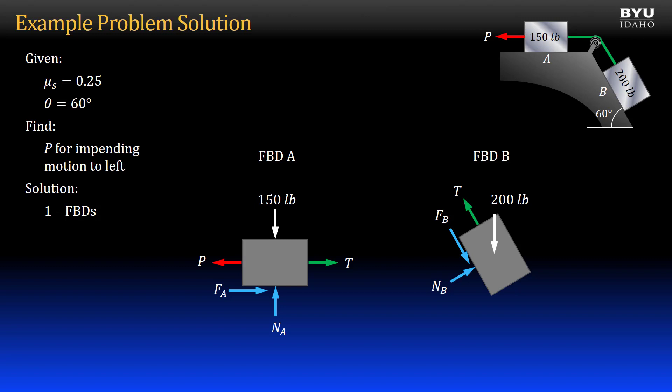Looking back at block A, we have four unknowns and two equilibrium equations — sum of forces in X and sum of forces in Y. We won't sum moments because we are analyzing this block as a particle. However, due to the impending motion condition, the friction force at point A equals the coefficient of static friction times the normal force, giving us three equations — not enough to solve for all the unknowns.